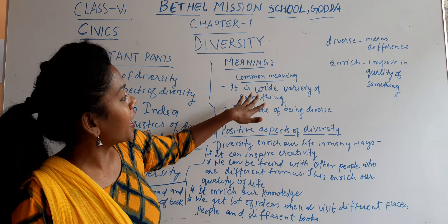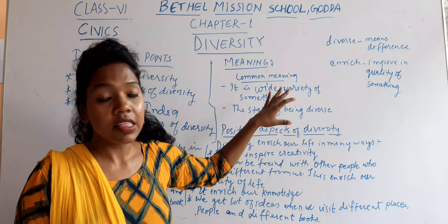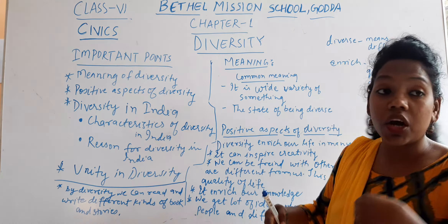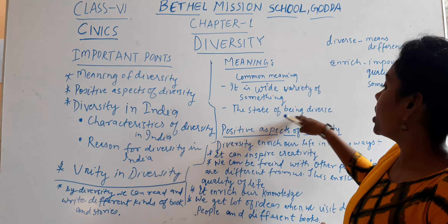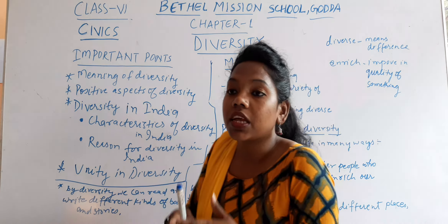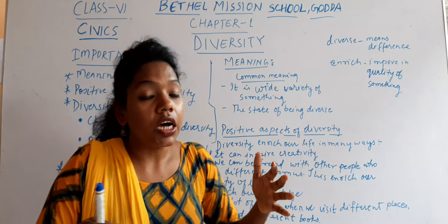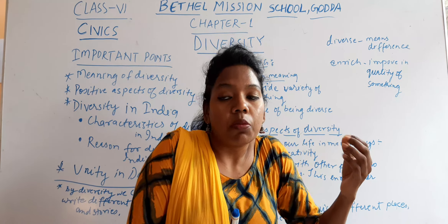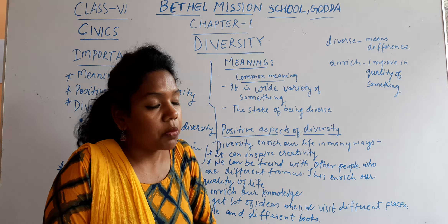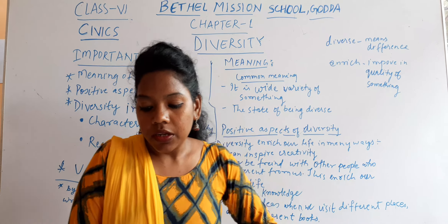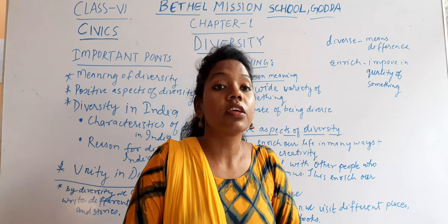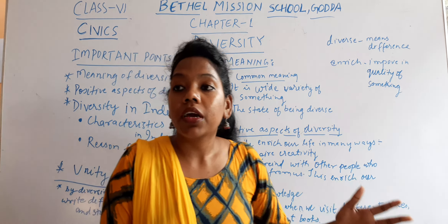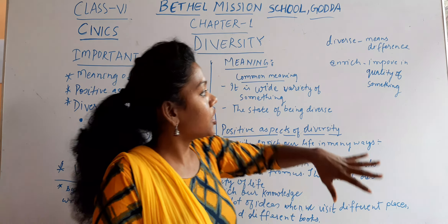In common meaning, diversity is a wide variety of something. And in your book, it is given as 'the state of being diverse,' meaning there are different people living in your environment — there can be short people, fair or dark people, according to their races. We can see various forms of diversity every day — it can be social, cultural, political, economical, or even the geographical environment.